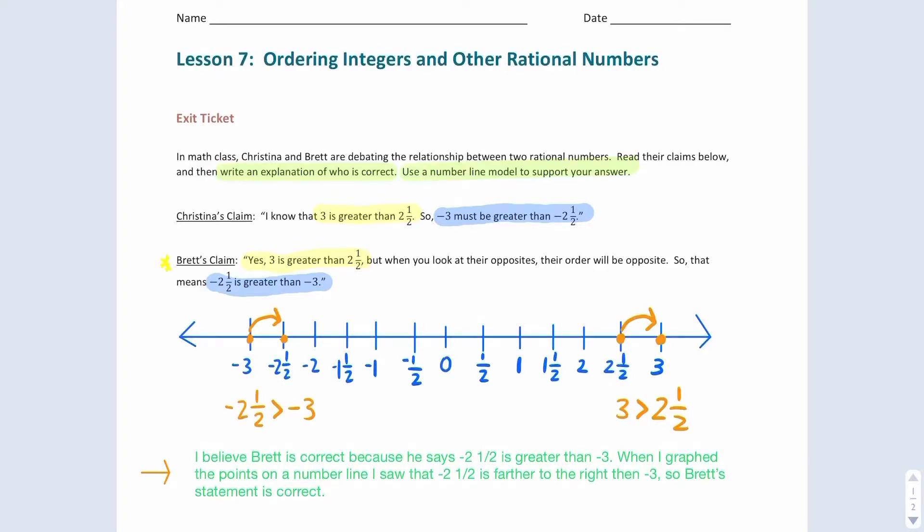We can expand this to think about a vertical number line. Remember, vertical means up and down. Numbers that are farther up are greater. Numbers that are farther down are lesser. Did you meet today's objective? You'll know you did if you graphed the numbers correctly on the number line and you agreed with Brett's claim.